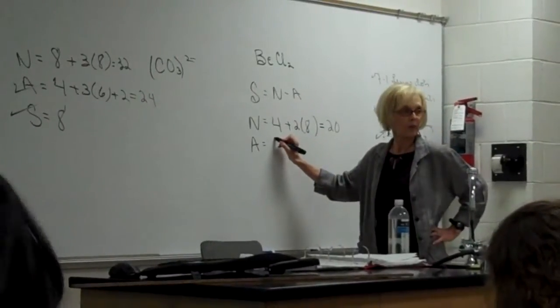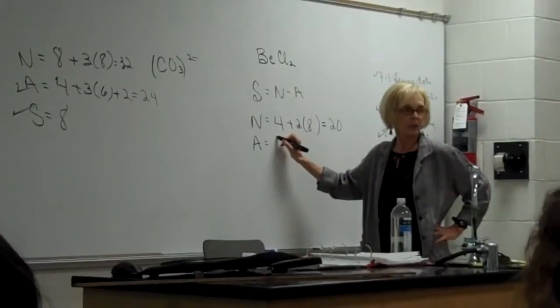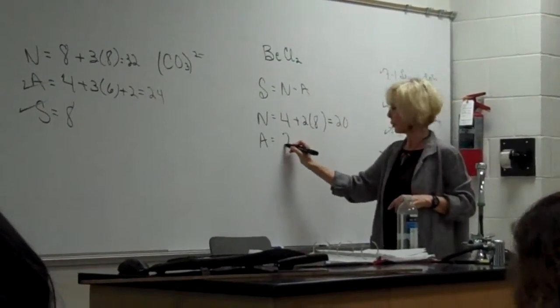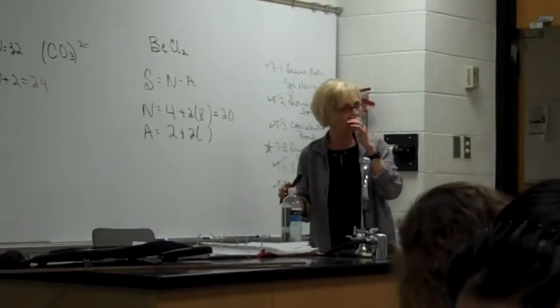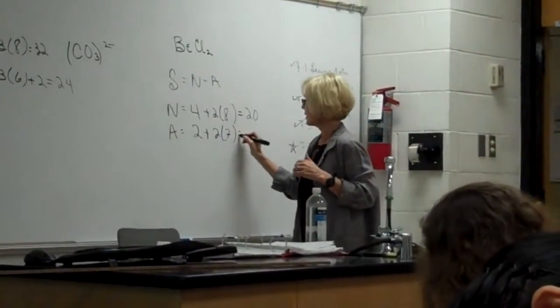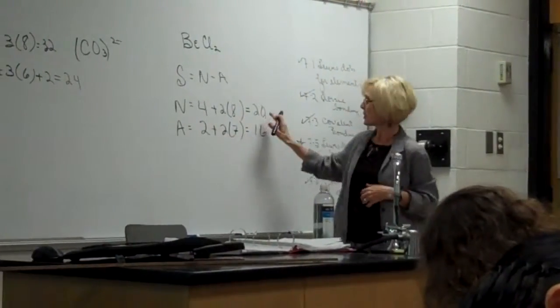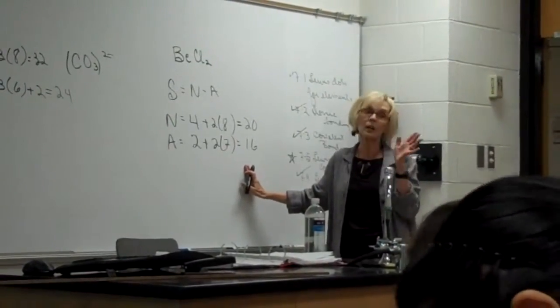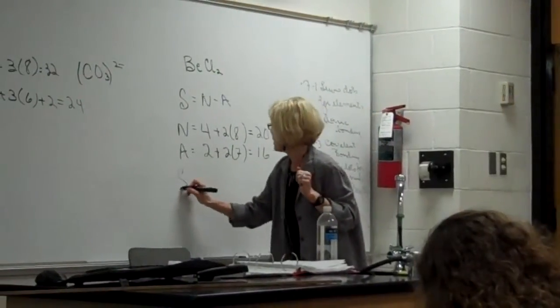Charles, how many does the beryllium come with? Two. Where's that? 2A family. Two. I have two chlorines and each chlorine comes with how many, Aaron? Seven. So we have 16 available. Notice, even number, even number. If the numbers have come out odd, I think I've probably made a math error.